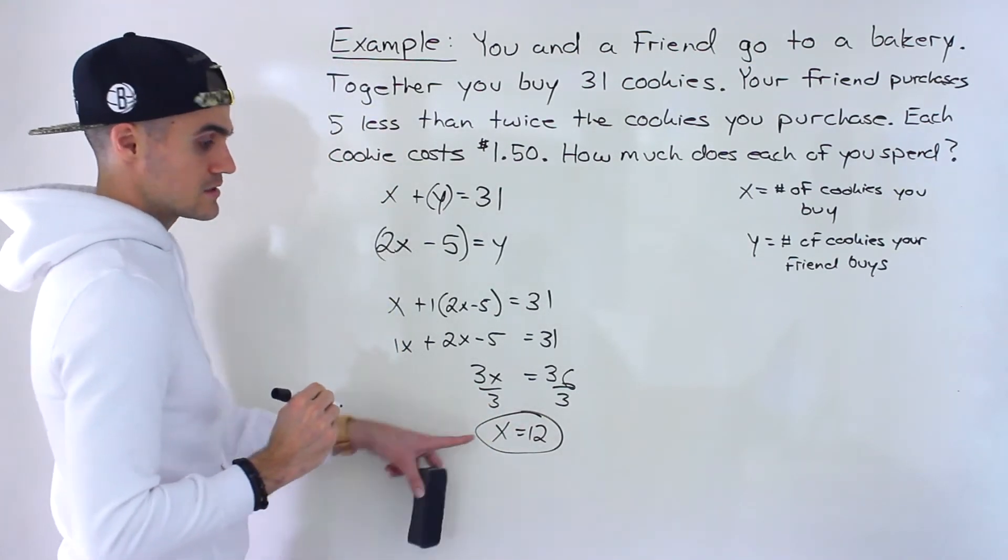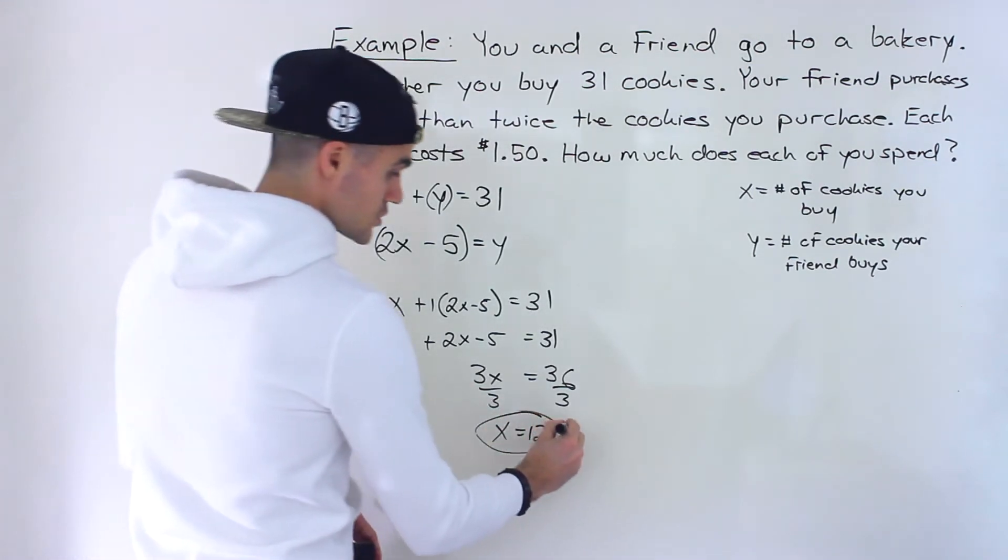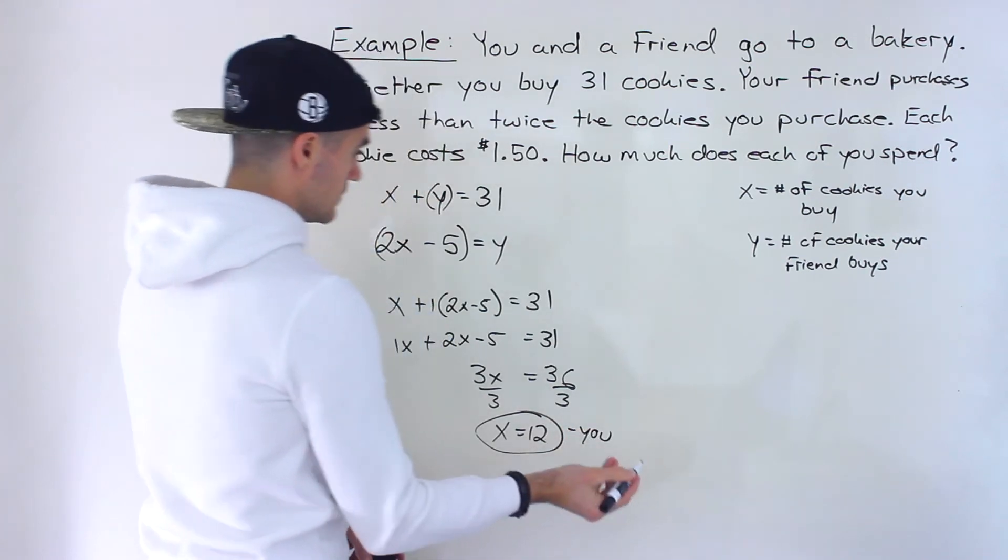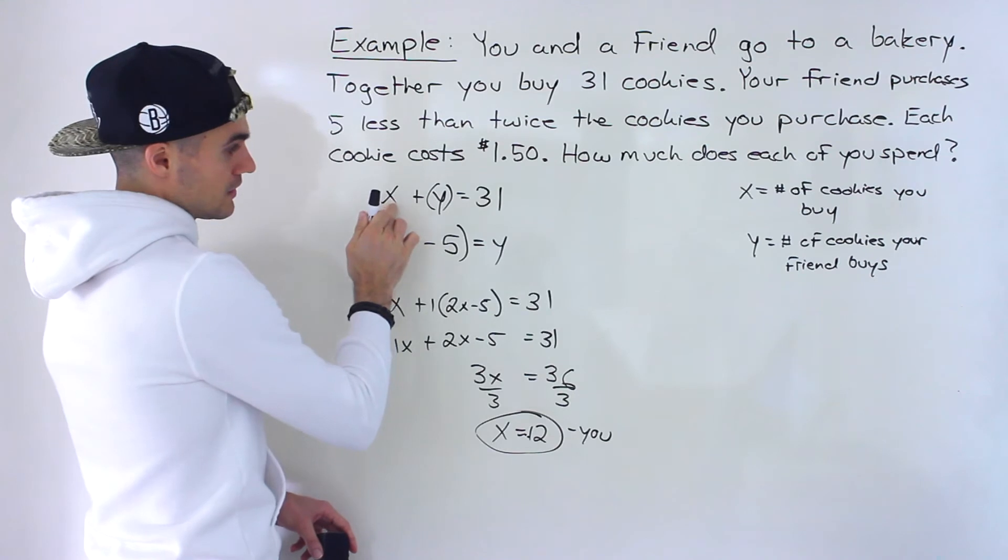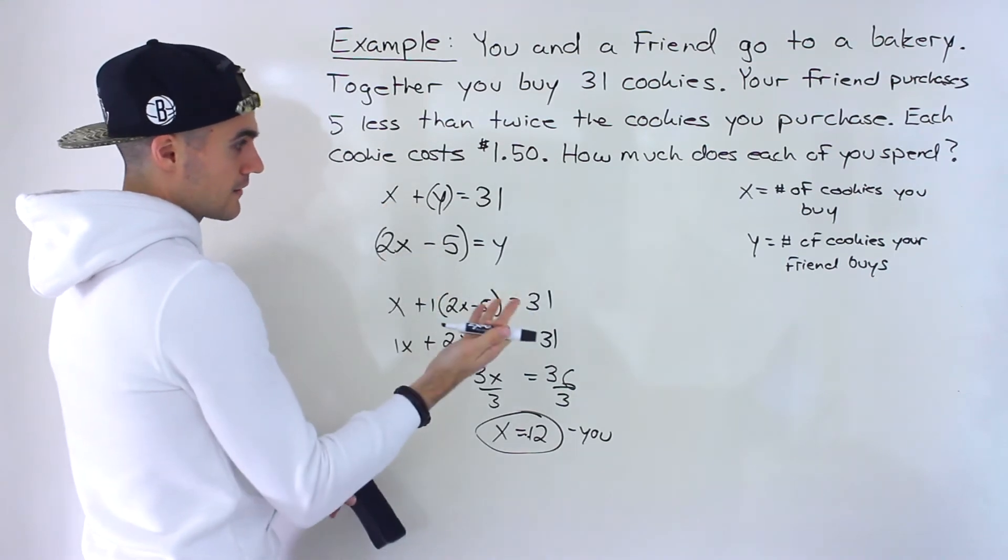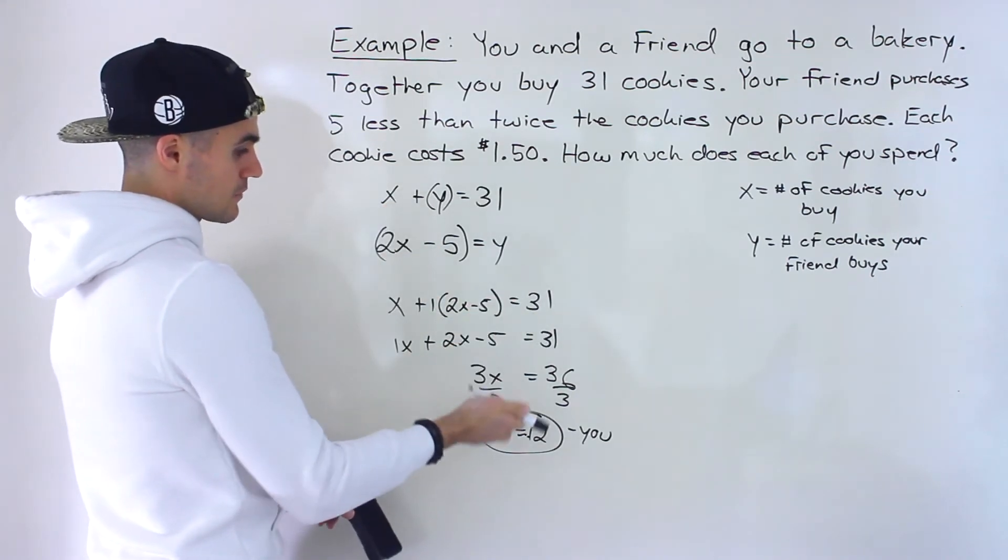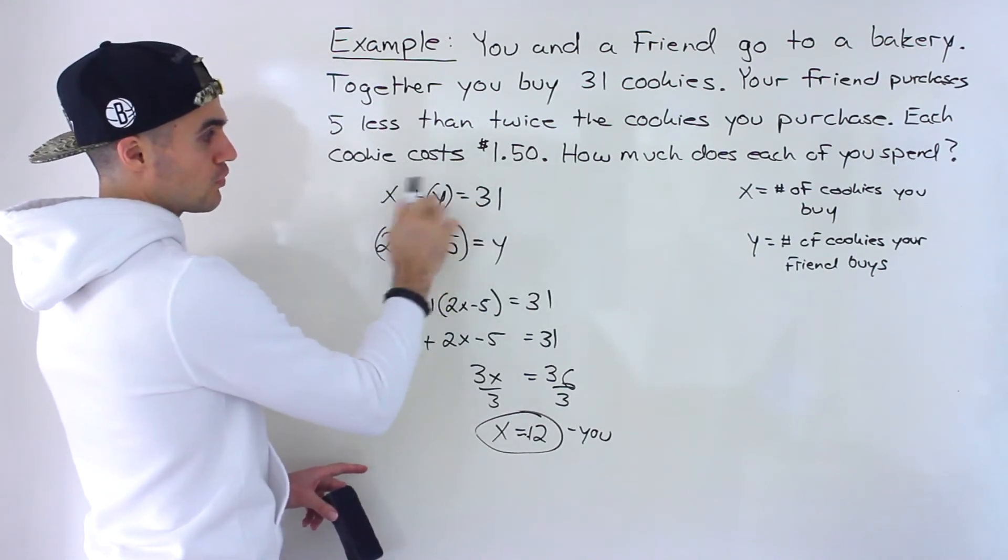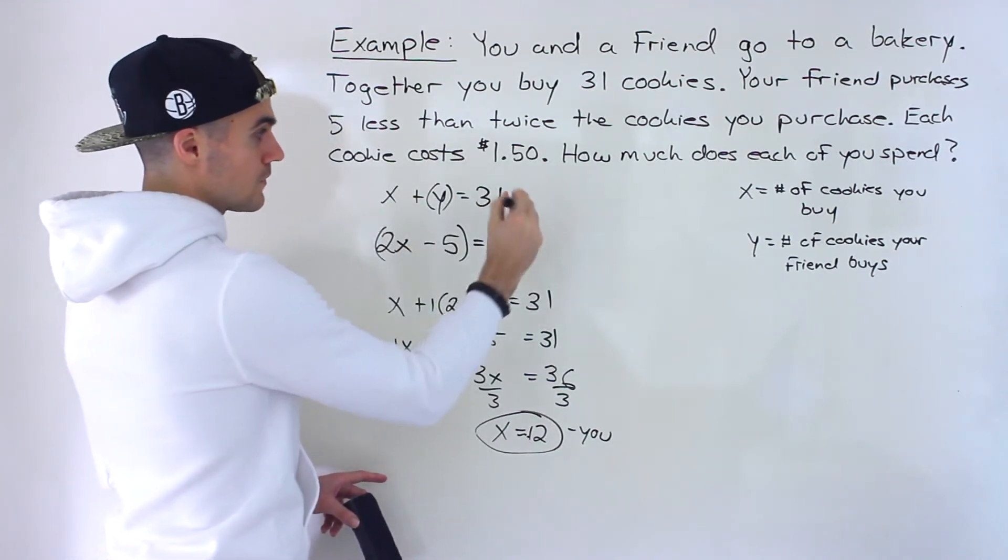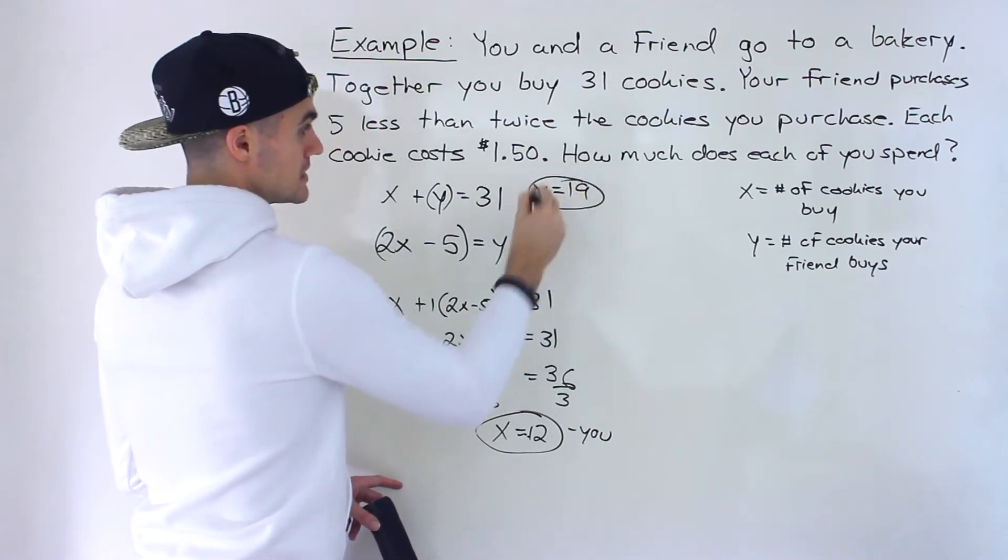Okay, so that's the amount of cookies that you purchase. This is you right here. And then we could take this 12. We could plug it into either here or here. It doesn't matter. To get the y value, we're going to get the same thing. Notice if we take 12, if we plug it in here, bring it over. 31 minus 12 would give us a y value of 19.